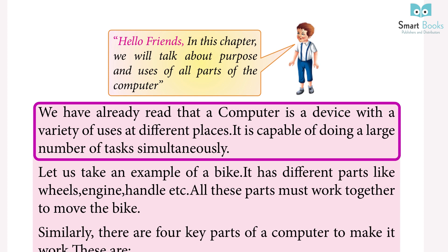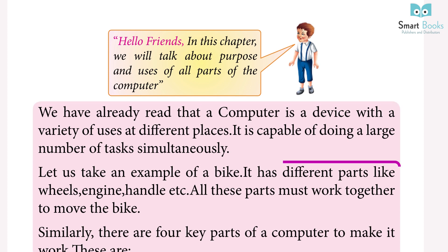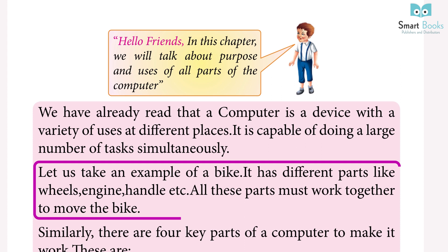We have already read that a computer is a device with a variety of uses at different places. It is capable of doing a large number of tasks simultaneously. Let us take an example of a bike — it has different parts like wheels, engine, handle, etc. All these parts must work together to move the bike.